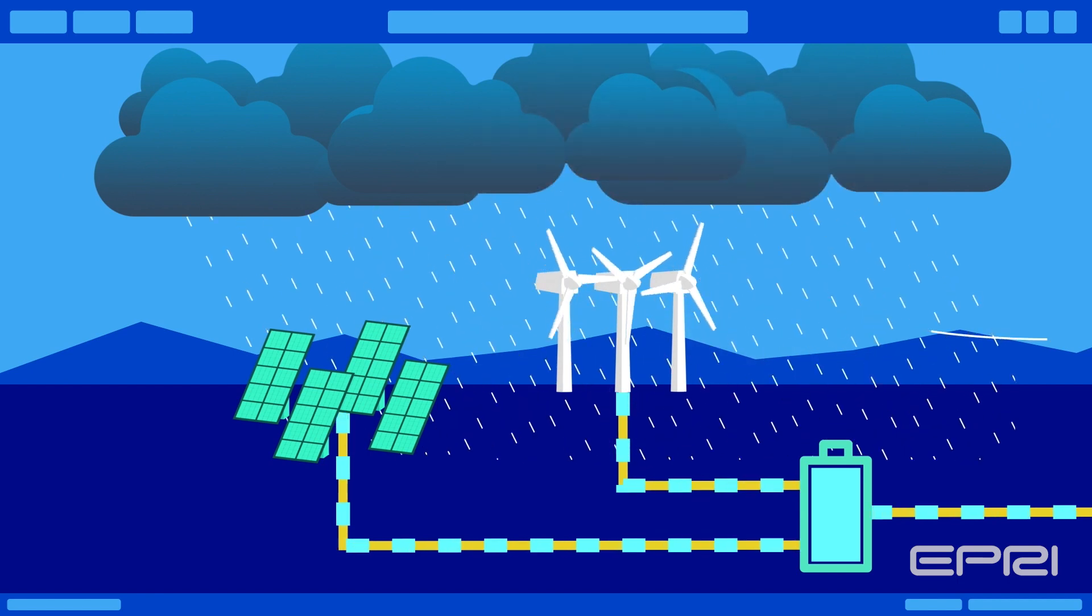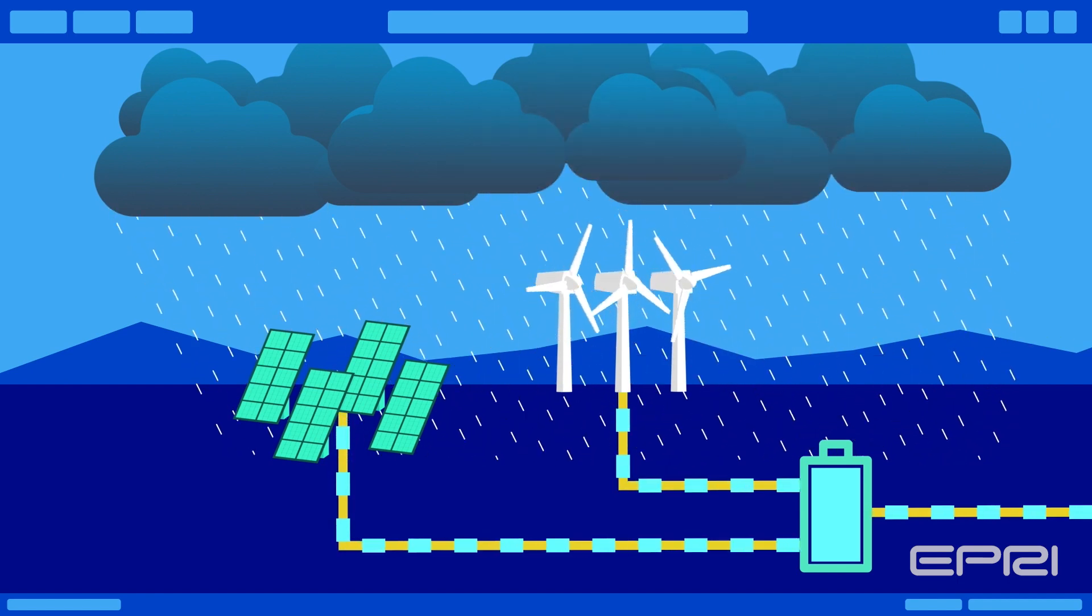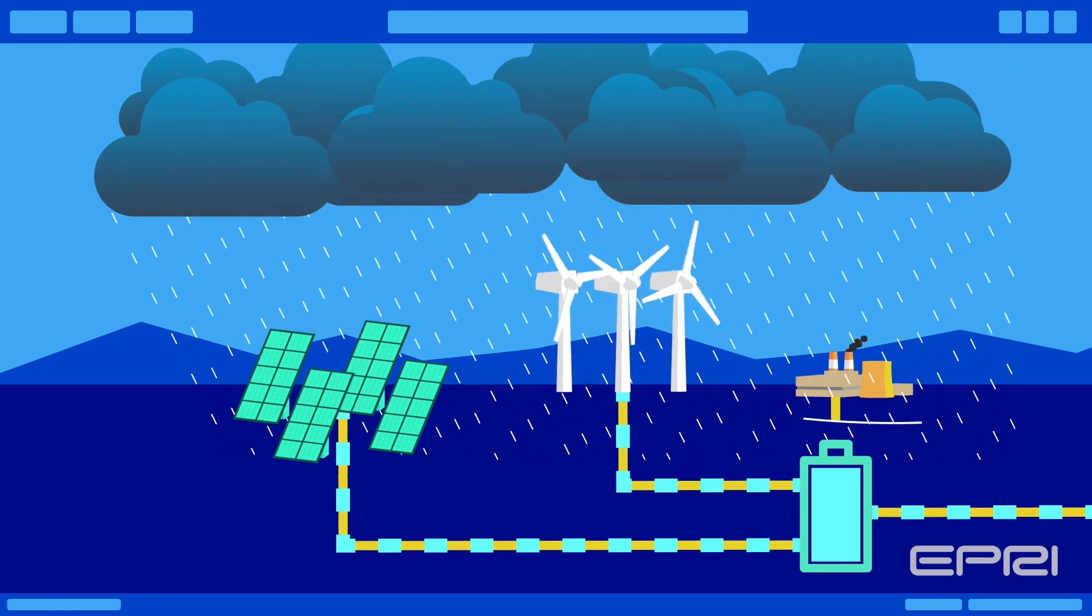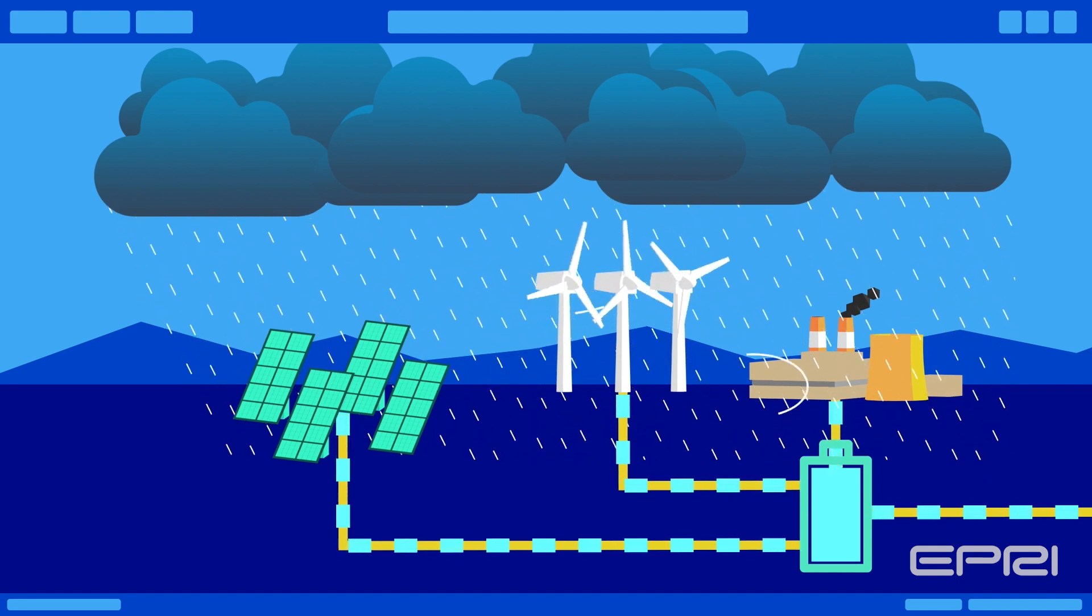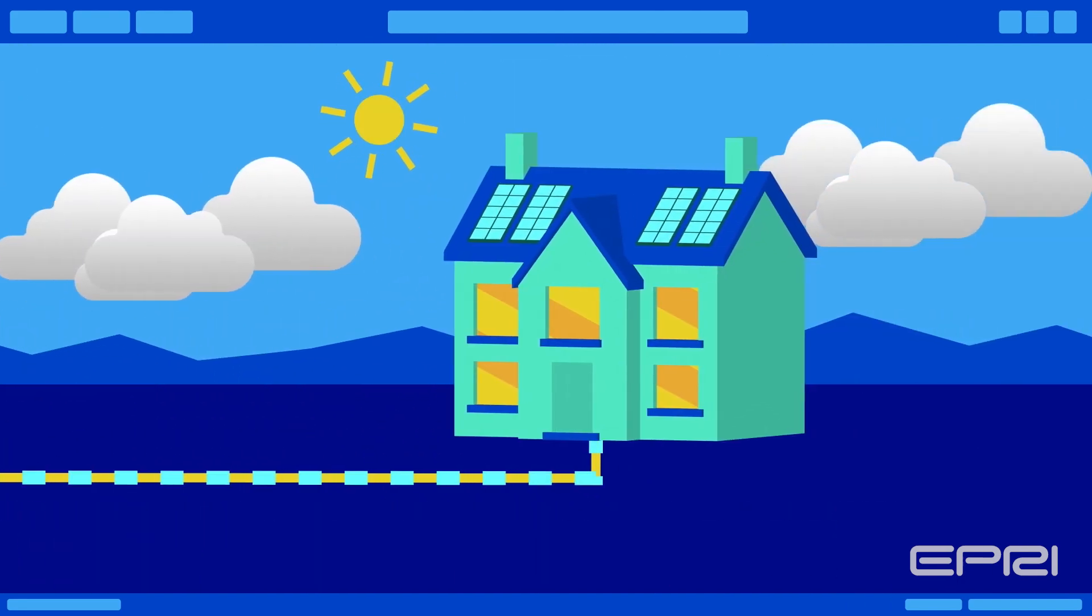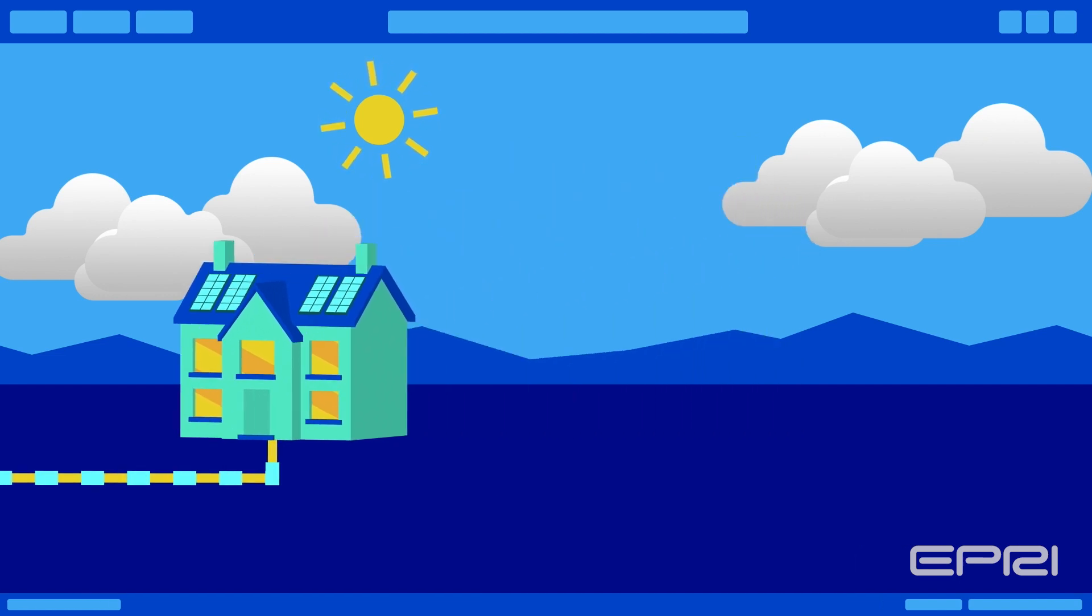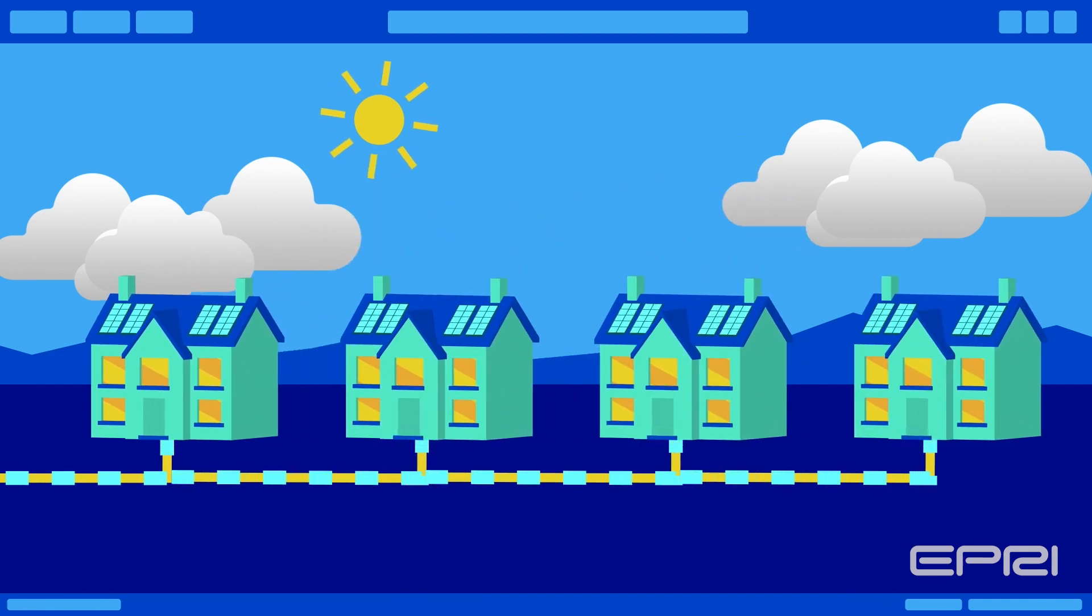In addition, greater dependence on weather and exposure to climate change pose additional threats to both traditional and emerging supply resources. Consumers are taking a more active role in the system, providing flexibility but also increasing complexity.